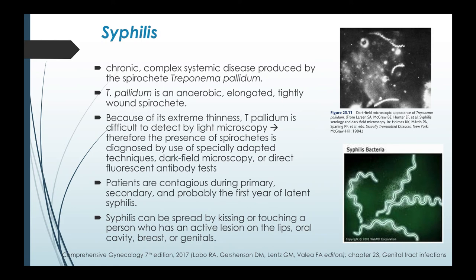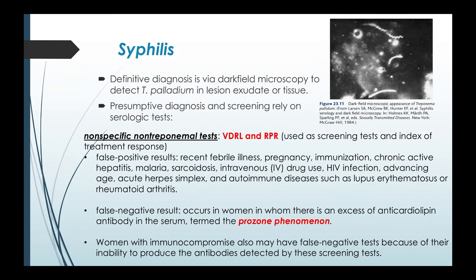Next we have syphilis, a chronic complex systemic disease produced by the spirochete Treponema pallidum. Treponema pallidum is an anaerobic elongated tightly wound spirochete that is difficult to detect by light microscopy alone. Therefore, the presence of spirochetes is diagnosed by dark field microscopy or direct fluorescent antibody tests. Patients are contagious during primary, secondary, and probably the first year of latent syphilis. Syphilis can be spread by kissing or touching a person who has an active lesion on the lips, oral cavity, breast, or genitals. Definitive diagnosis is via dark field microscopy. Presumptive diagnosis and screening rely on non-specific non-treponemal tests: VDRL and RPR, used as screening tests and an index of treatment response.